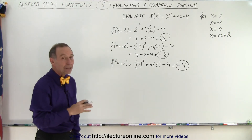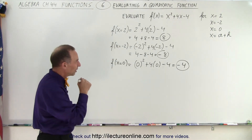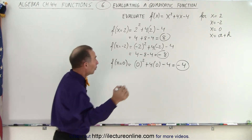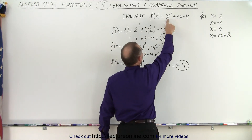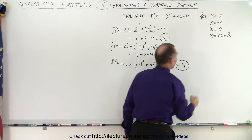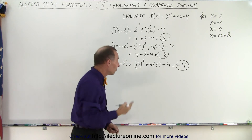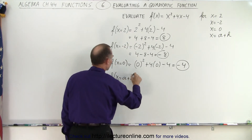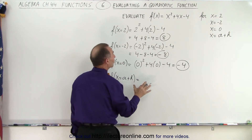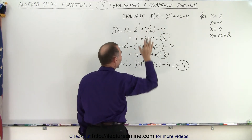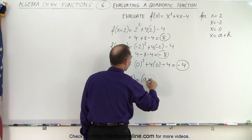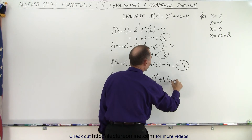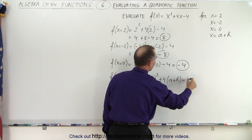Finally, the function when x equals a plus h. Now, that used to scare me — I used to look at it and go, what in the world is that? But once they told me all you have to do is take every x and replace it by a plus h, I thought, okay, I can do that. f when x equals a plus h is equal to — first I replace every x by a plus h — so this is (a plus h) squared plus 4 times (a plus h) minus 4.